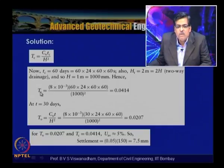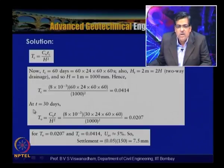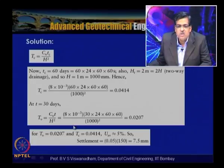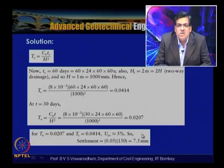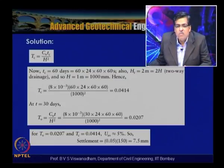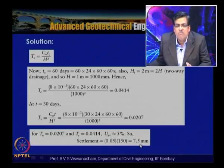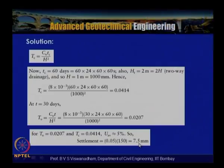From the Olson (1977) ramp loading chart, for Tv = 0.0207 and Tvc = 0.0414: Uav ≈ 5%. Settlement at t = 30 days = 5% × 150 mm = 7.5 mm. This shows that halfway through the construction period, only 7.5 mm of settlement has taken place — much less than would be assumed under instantaneous loading.